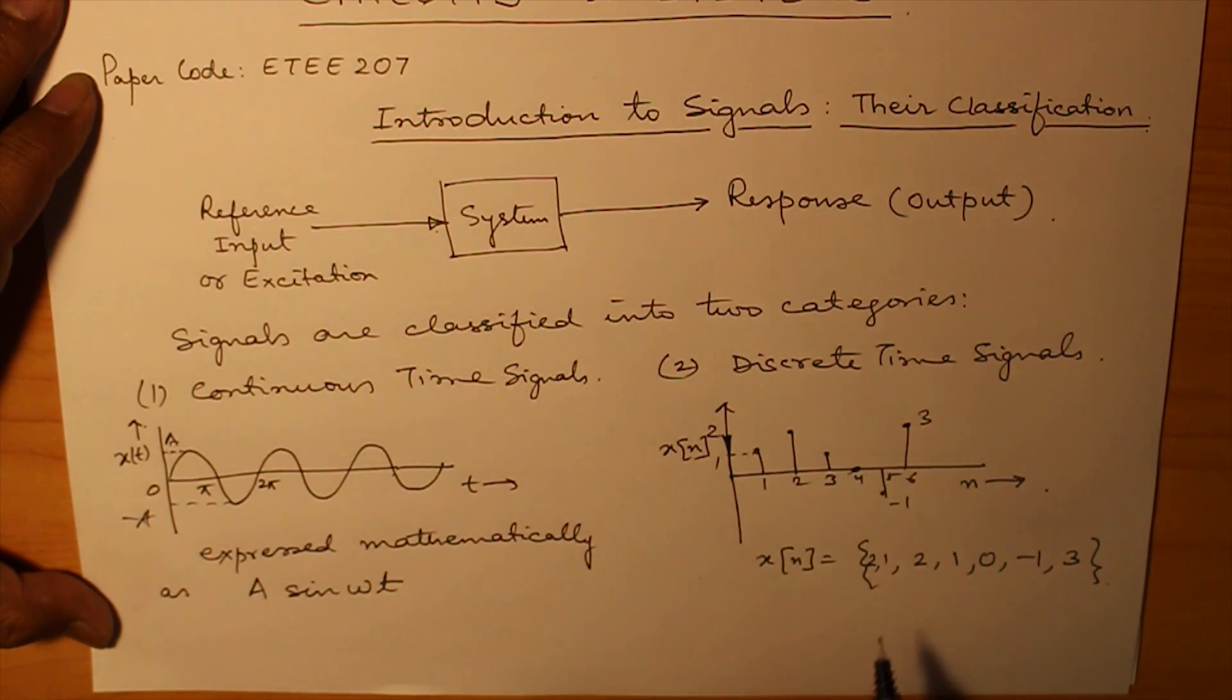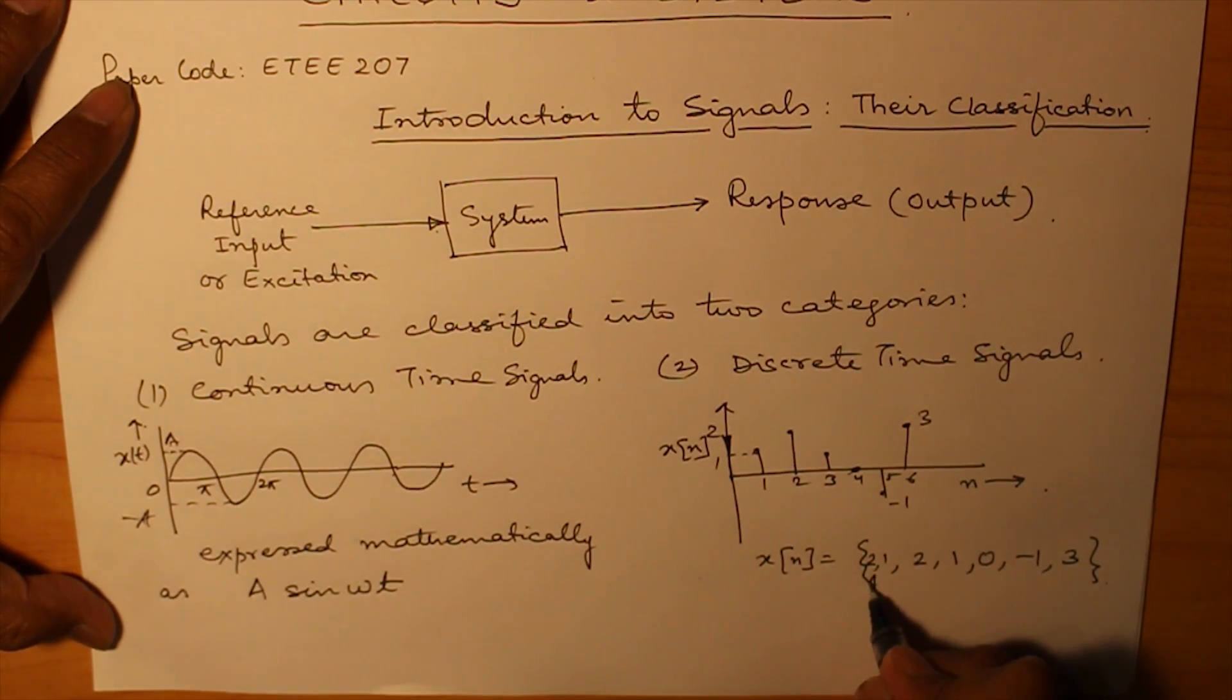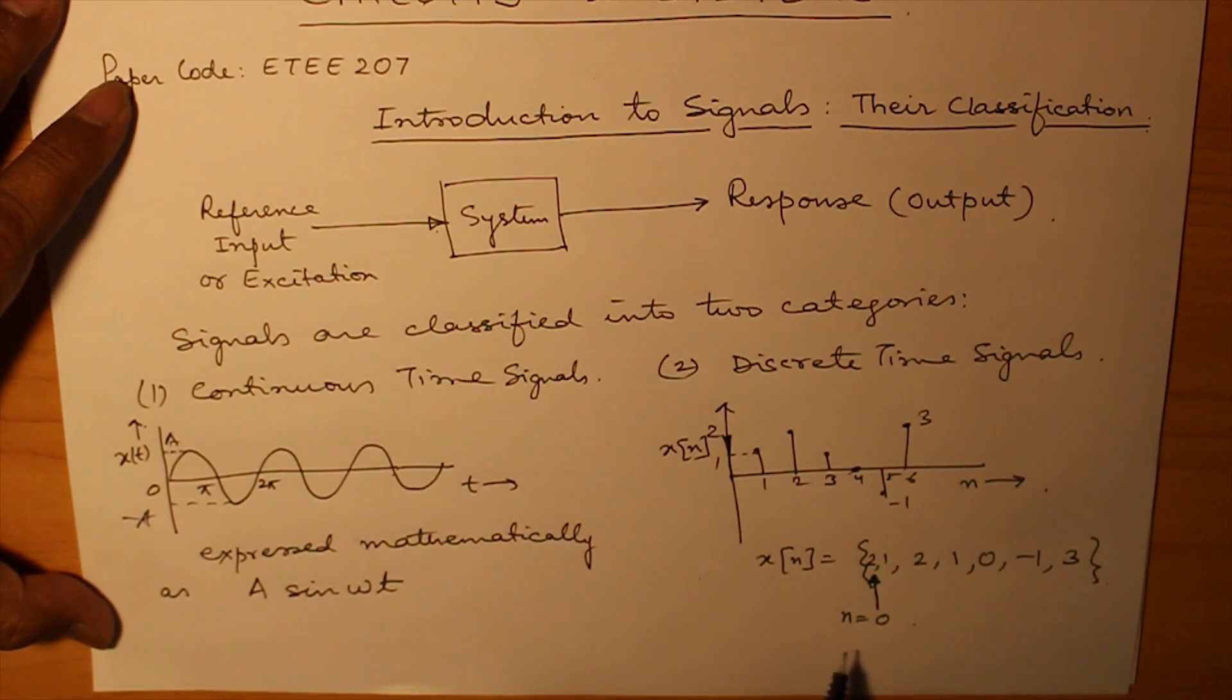Now, how to know that which value is pertaining to what number of n? There is an arrow which is kept here which indicates that it is for n is equal to 0. Sometimes, in the question, it will be specified that n is equal to 0 is a given. And sometimes, just the arrow is there. So, you should make it out that the arrow pertains to n is equal to 0.